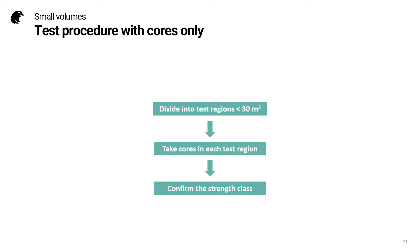Here we can see the workflow if we're using cores only. We divide larger volumes into test regions not exceeding 30 cubic metres, take cores in each of these test regions, and then confirm the strength class.